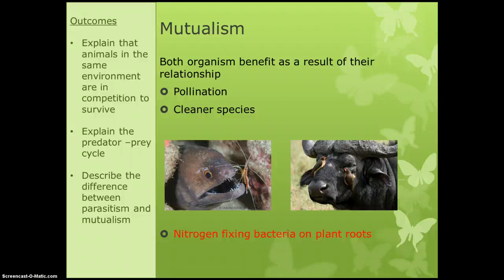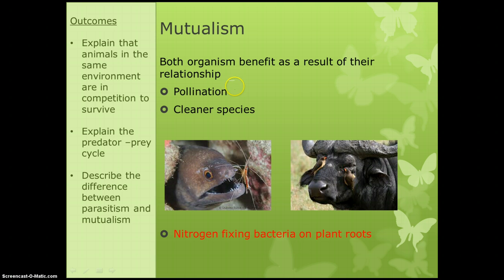Mutualism is where one animal might feed on or around the other but both organisms benefit. An example is pollination: bees go to flowers to get their nectar and at the same time spread pollen from flower to flower. The flowers benefit because they get pollinated and the bees benefit because they get the nectar to make honey.